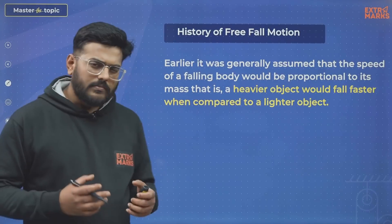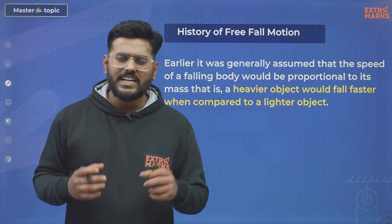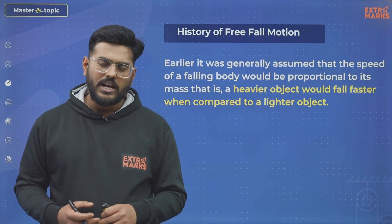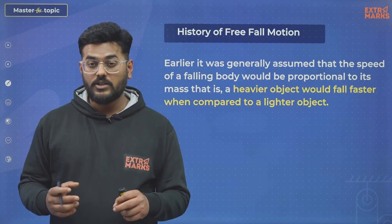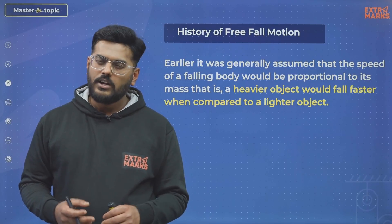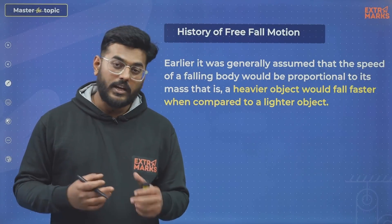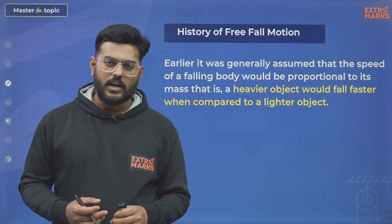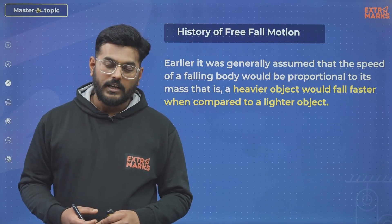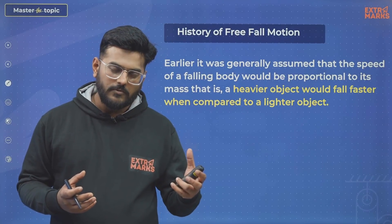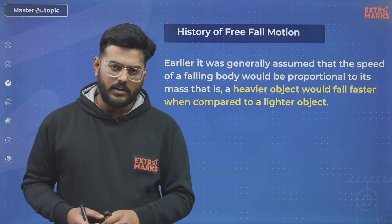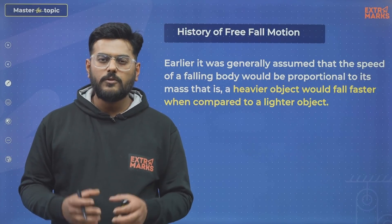Let's get into history and learn what the assumption was before things were properly understood. Before Galileo, the assumption was that when two objects are falling under the influence of gravity, the object with a heavier mass will fall at a faster rate compared to an object with a smaller mass. And this assumption persisted for a very long time.